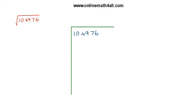Welcome to Online Math for All. In this video, we are going to see how to find the square root of a number using long division. We have a number inside the square root, that is one hundred and four thousand nine hundred and seventy-six. I want to find the square root of this number using long division, so I write this number inside the long division here.